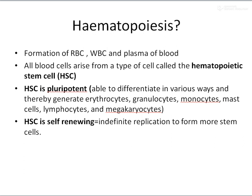The hematopoietic stem cell is characterized in two ways. One, it is pluripotent, and second, it is self-renewing. Pluripotent means it is able to differentiate into various forms and thereby generate erythrocytes, granulocytes, monocytes, mast cells, lymphocytes, and megakaryocytes. So one particular cell itself is capable of forming different lineages of cells.